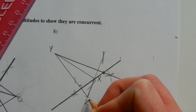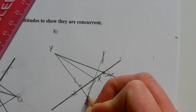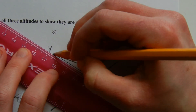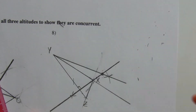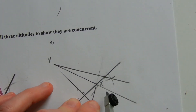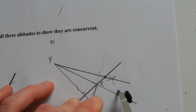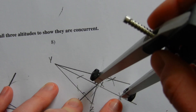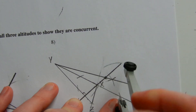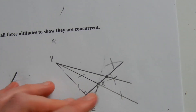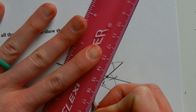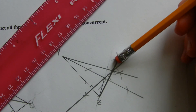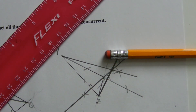Now when I find the altitude with vertex Z it will go through this point. Extending out XY — the side opposite vertex Z — I start at vertex Z, intersect line XY, and then intersect it again. From those intersection points I adjust my compass to a little more than halfway, make one mark, go to the other intersection, and make my final mark. From vertex Z to that intersection I draw my altitude, which does indeed intersect the point of concurrency — the orthocenter.